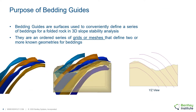Bedding guides are surfaces used to conveniently represent a series of bedding for a folded rock in 3D slope stability analysis. These bedding guides can be a series of grids or meshes that define two or more non-uniform geometries for the bedding. We can see on the left side image the potential use of these surfaces as bedding guides and their inclusion in the model volume. If we switch to the YZ view in Plexis 3D LE, we can see that these purple lines are presenting the bedding guides associated with this specific model.